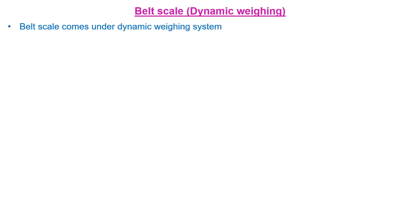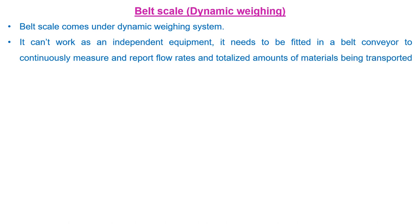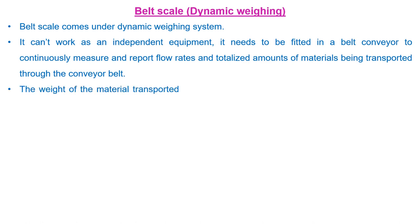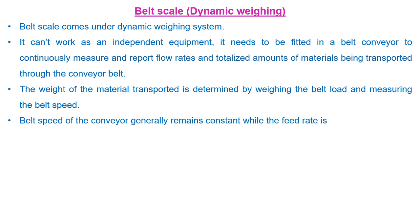Our next topic is belt scale. As mentioned earlier, belt scale comes under the dynamic weighing system. It cannot work as independent equipment — it needs to be fitted in a belt conveyor to continuously measure and report flow rates and totalize the amount of materials being transported. The weight of material transported is determined by weighing the belt load and measuring the belt speed. Belt speed of the conveyor generally remains constant while the feed rate is regulated by varying the belt loading if required.